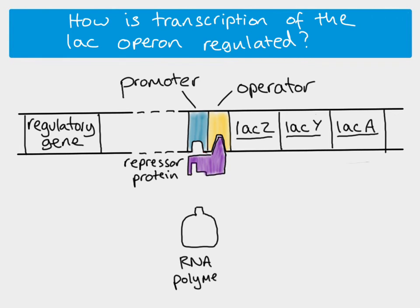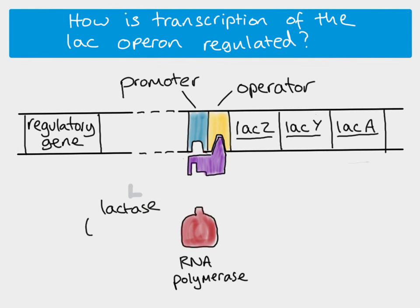At the moment, the repressor protein is blocking the binding site in the promoter, so RNA polymerase is unable to bind and transcription doesn't take place. This is an example of inducible enzymes — these genes will only be transcribed if they are induced by the presence of something else. If there is lactose in the environment, lactose will bind to the repressor protein, and when that happens it causes a change in the shape of the repressor protein.